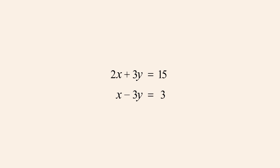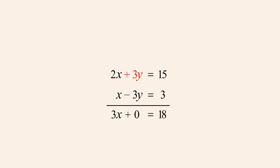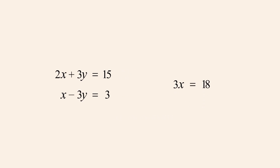The elimination method involves adding the two equations in a way that eliminates one of the variables. For example, to add these equations, we add the x-terms, the y-terms, and the constant terms to create a new equation. Since the y-term in the first equation is 3y and the y-term in the second equation is negative 3y, the sum of these terms is zero and the y-term is eliminated from the resulting equation.